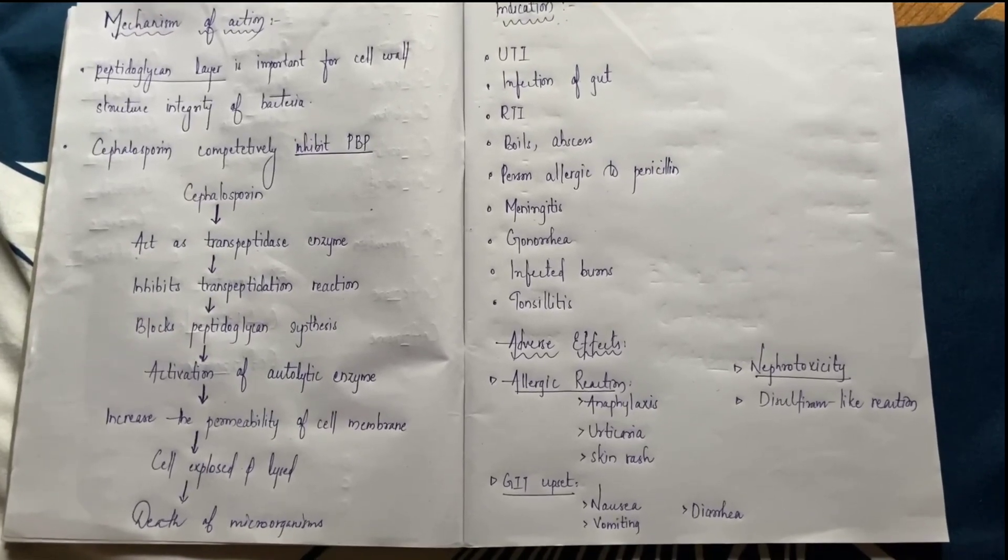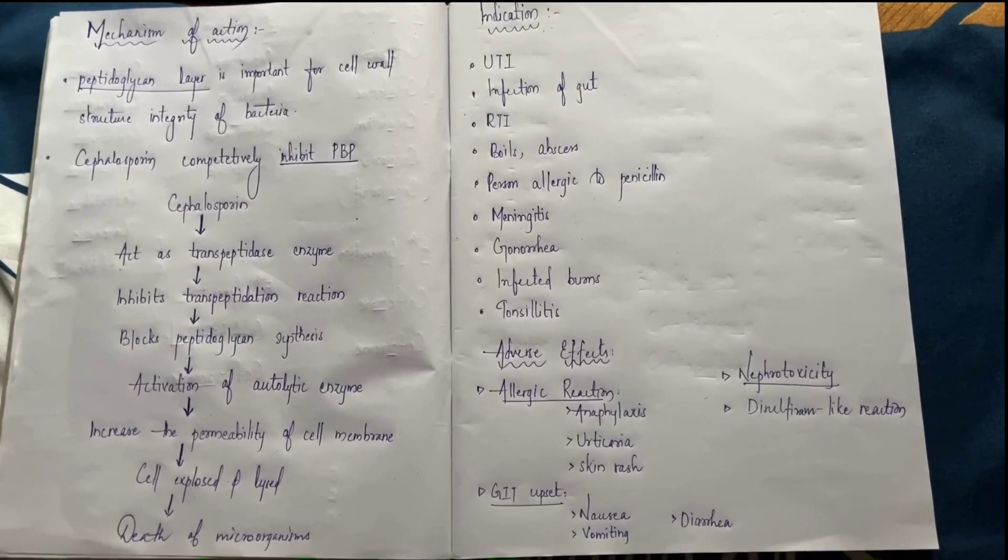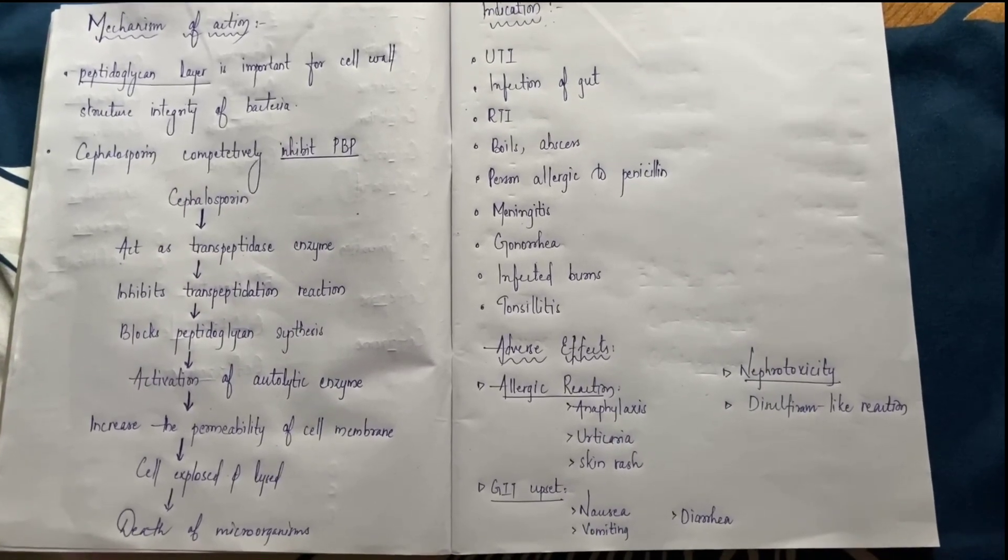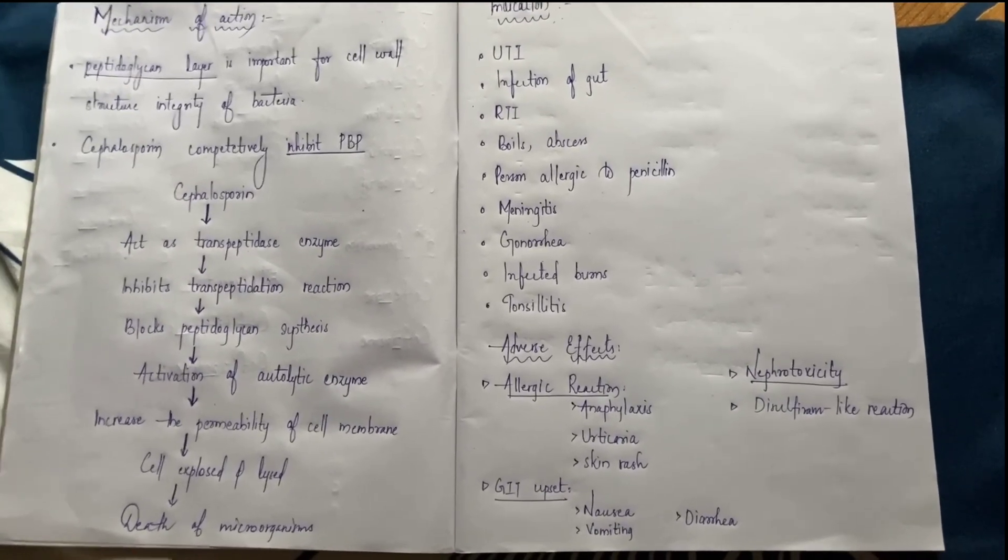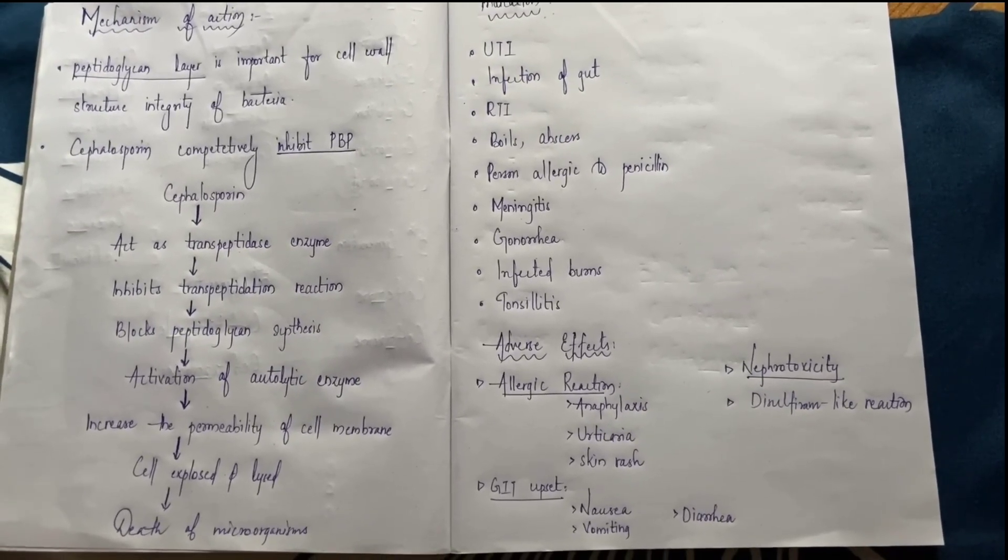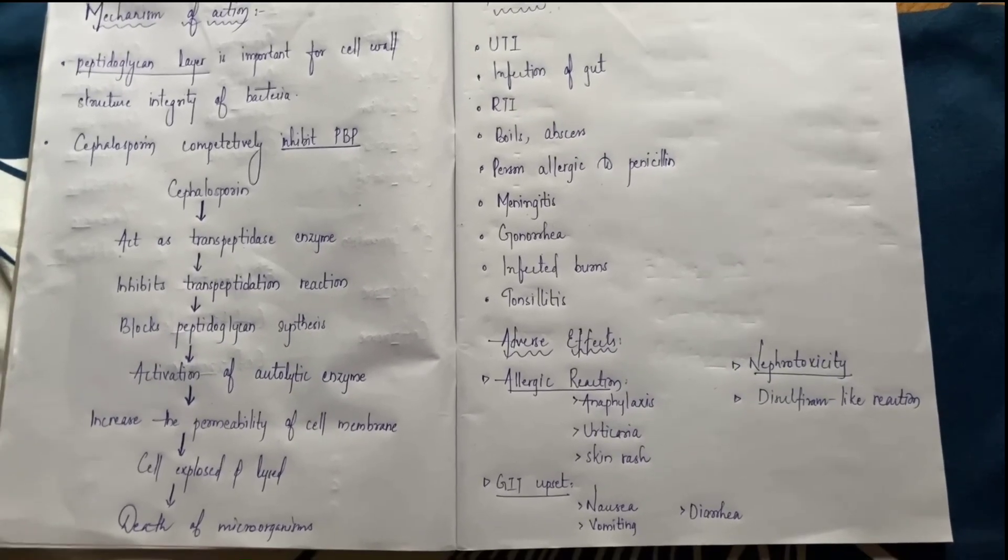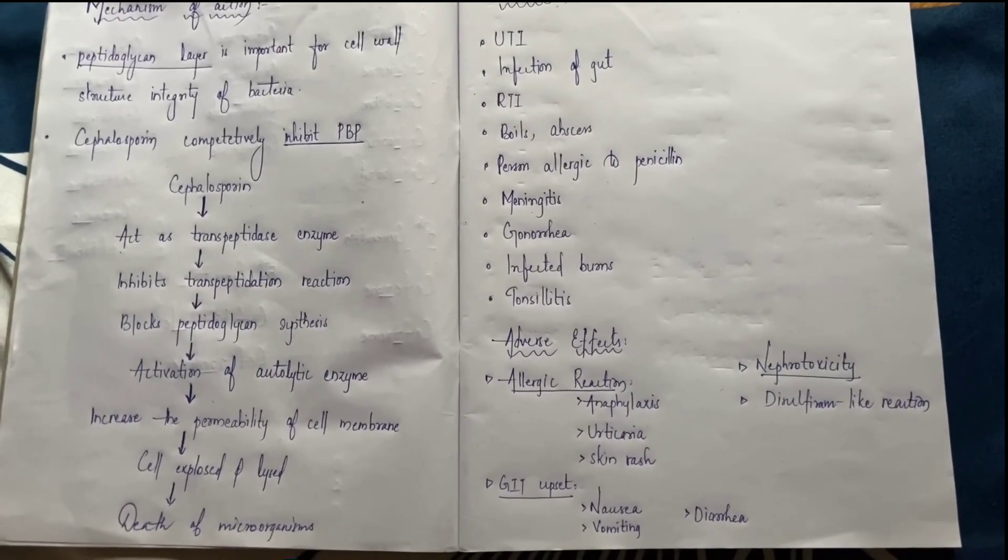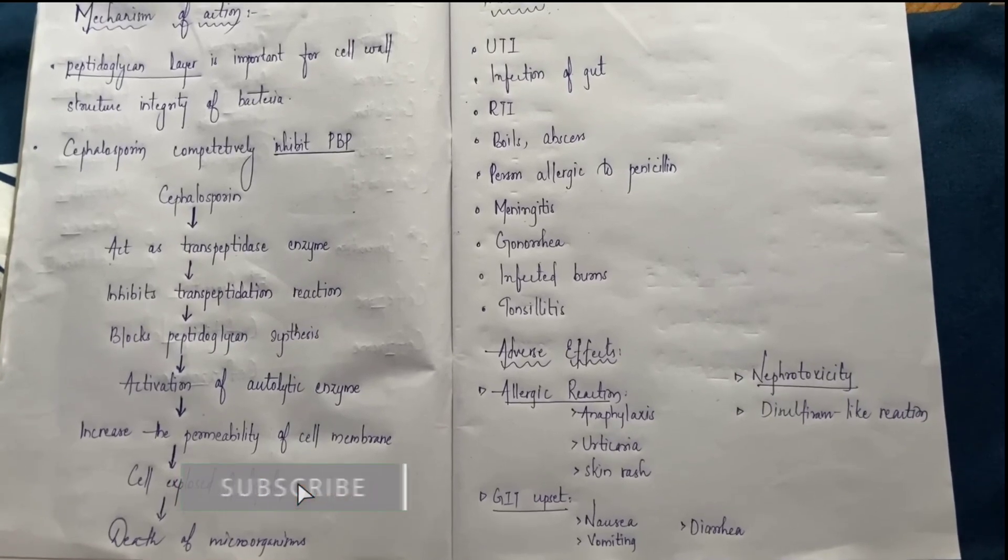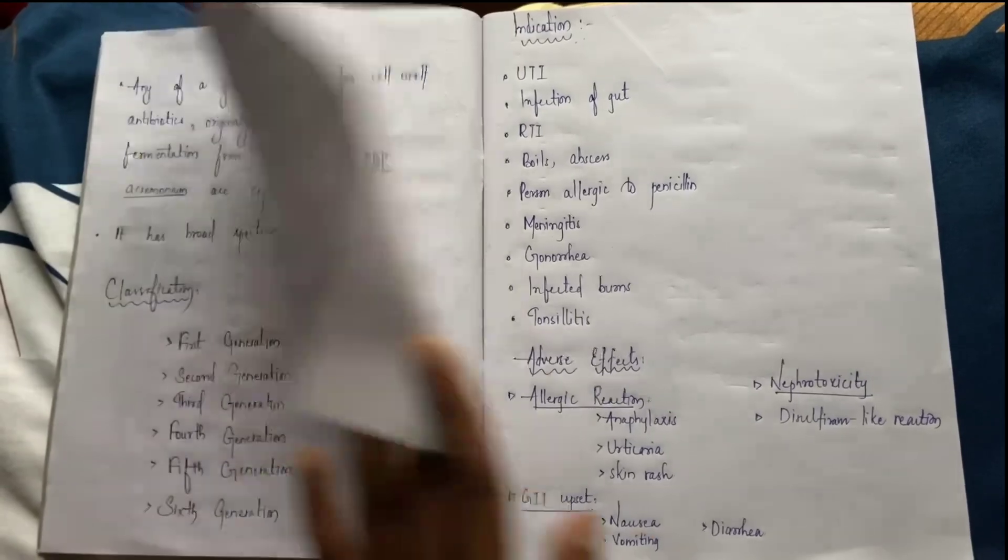Next is adverse effects. If someone has a Cephalosporin reaction, they can have allergic reactions, that is anaphylactic reactions, urticaria, skin rashes. Next, GIT gastrointestinal upset including nausea, vomiting, and diarrhea. Next, nephrotoxicity - it affects the kidney, as well as disulfiram-like reaction. These are the adverse effects of Cephalosporin.